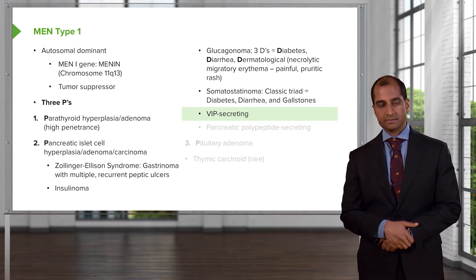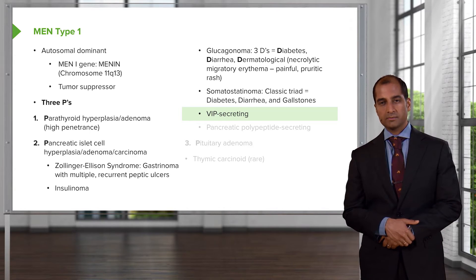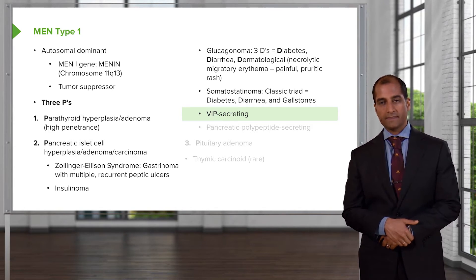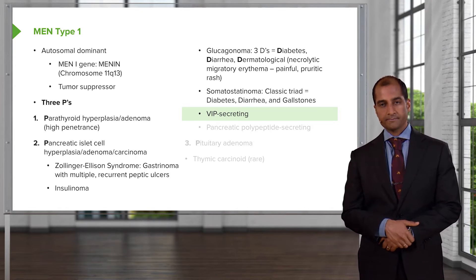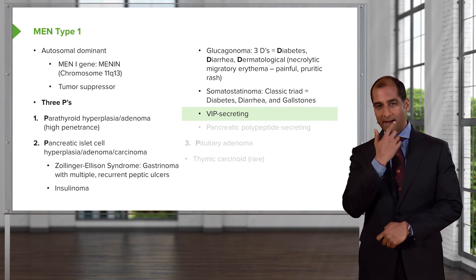Glucagonoma: the three D's. We have diabetes because of excess glucagon, diarrhea, and a dermatologic finding referred to as necrolytic migratory erythema — which may look like impetigo, with honey-crusted lesions on the sides of the mouth.